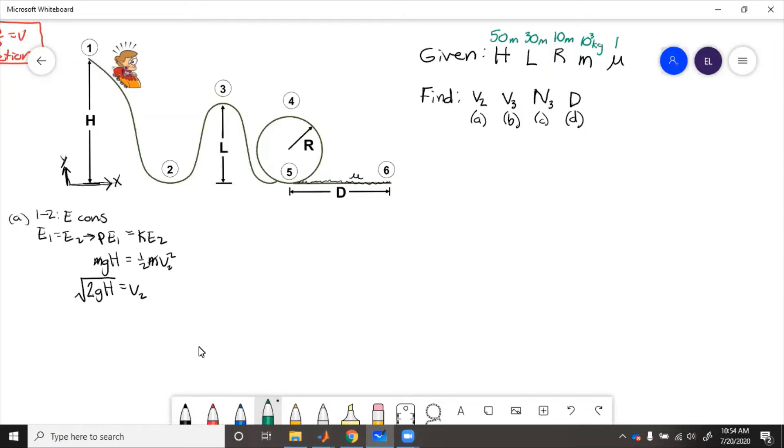So putting in the numbers, that is 2 times 9.81 times 50, v2 equals 31.3 meters per second.